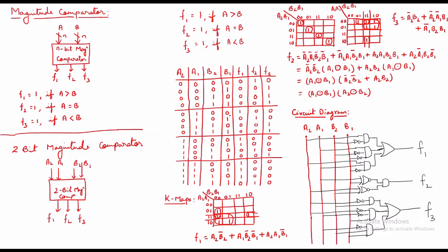For A=01 and B=00, A is greater than B so F1=1, the others are 0. For A=01 and B=01, both are equal so F2=1, the others are 0. For A=01 and B=10, this is value 1 vs value 2 so B is greater than A, meaning A is less than B, so F3=1, the rest are 0. For A=01 and B=11, B is greater, so A is less than B and F3=1. I have checked the remaining rows for A=10 and A=11 similarly and completed the full table for F1, F2, and F3.